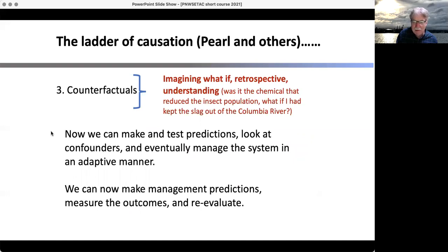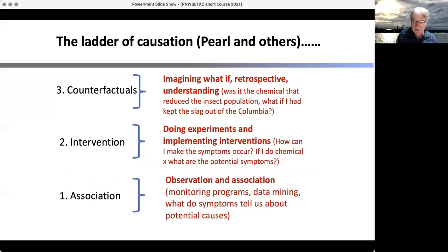The third one is counterfactuals. Imagining if, what if, if I do this, then these things can occur, especially for very different kinds of situations. Was it a chemical that reduced the insect population in a particular part of the Columbia River? Or is it the slag coming down from a smelter from Canada? Now you can take that information you know about insects, how they affect perhaps macroinvertebrate populations, what you know about slag and the chemicals in there, and using a very specific site, the Columbia River. Now we can make and test predictions, look at confounders, things that may change it, and manage the system in an adaptive manner because you keep making hypotheses about causality and re-evaluating them. So now we can make management predictions. In our research, what we focus on is the counterfactual level.